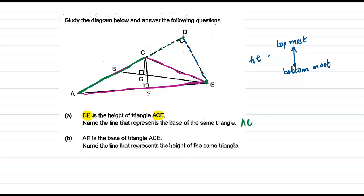Now let's see the second part. In the second part we have been asked, AE is the base of ACE. Now let's see - this is the triangle ACE again, I am marking it.